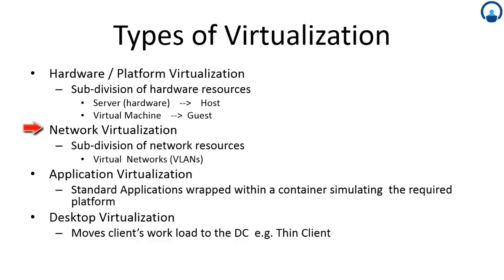The second type of virtualization is network virtualization, where the network resources are subdivided. By network resources we mean the NIC and everything related to networking. In effect it is the creation of virtual networks or VLANs — virtual local area networks. The third type is application virtualization, where standard applications are wrapped within a container simulating the required platform. An application is put into a container and it operates within that domain.